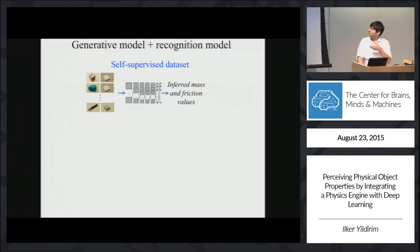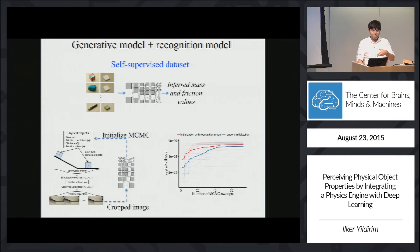Which we turn into a self-supervised dataset and train as a recognition model, which we then plug in into our inference scheme, which then leads to a much more efficient inference algorithm for the same hard problem.